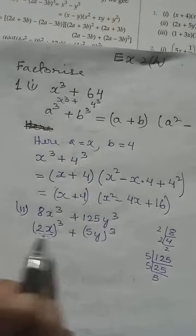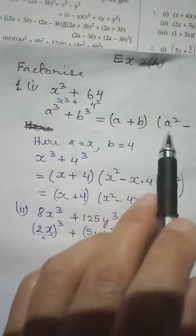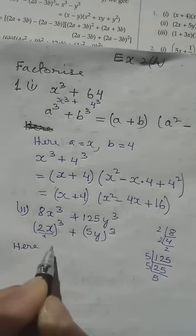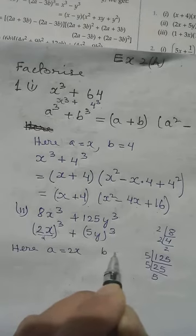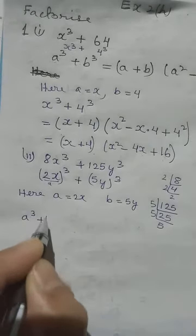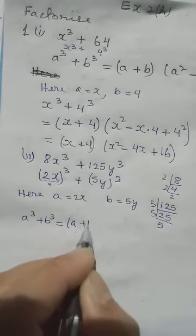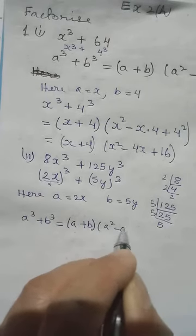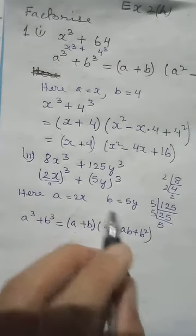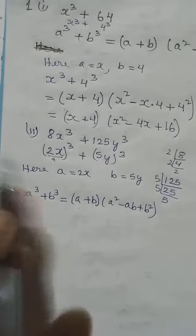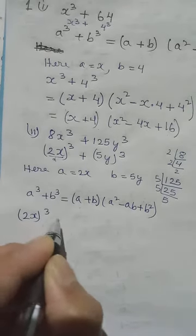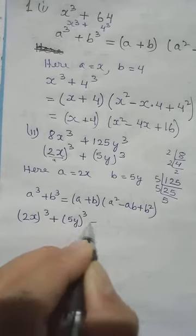So b equals 5y. We write the answer in factorized form: a plus b, whole times a square minus ab plus b square. Our a is 2x and our b is 5y. The formula is a cube plus b cube equals a plus b, whole times a square minus ab plus b square. In place of a we replace with 2x and in place of b we replace with 5y. So 2x whole cubed plus 5y whole cubed.